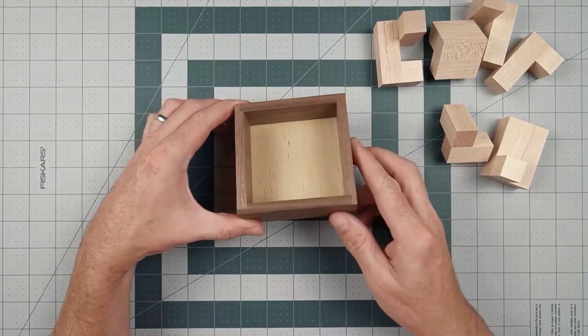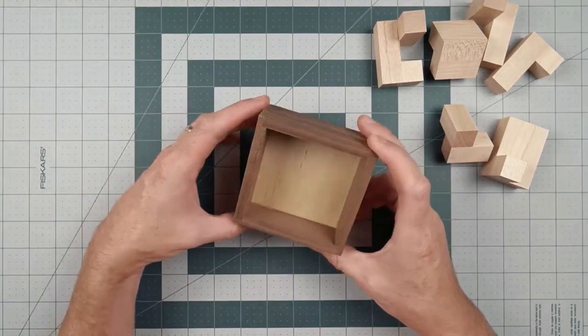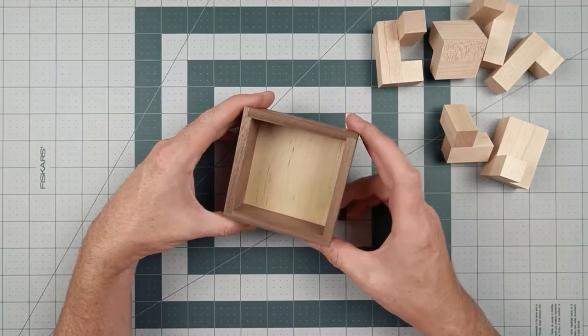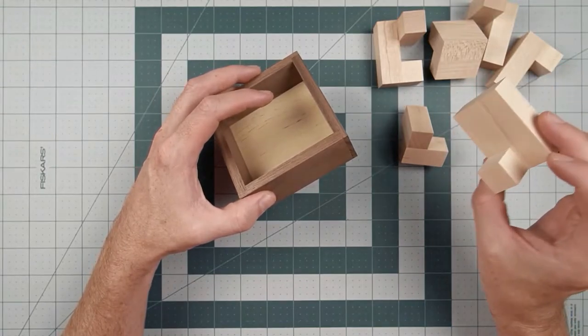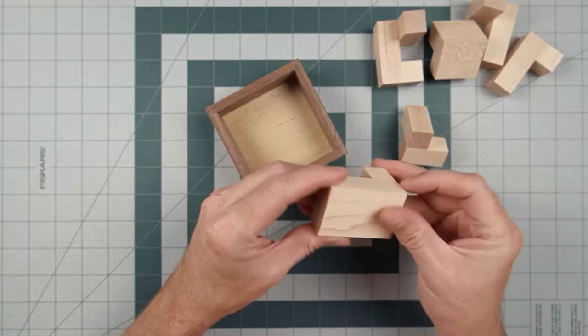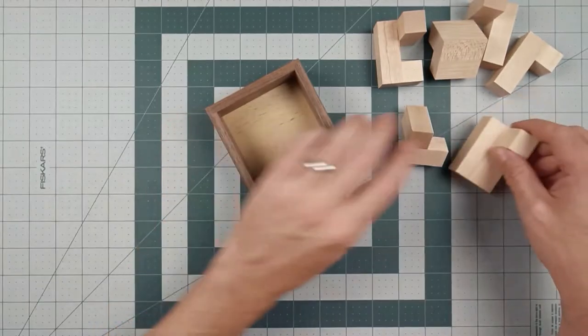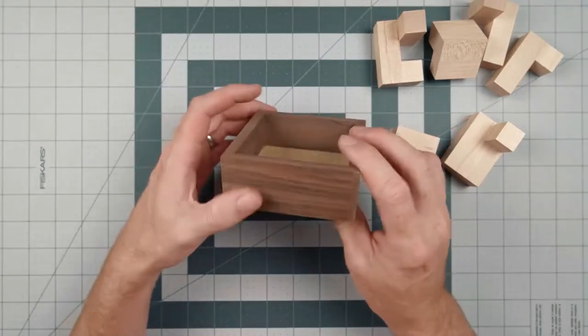So like I said, this is built by Eric Fuller, built and designed. So this is my first Eric Fuller designed puzzle. These pieces are made out of maple, cut very cleanly, very smooth. They feel good. And the box is made out of walnut.